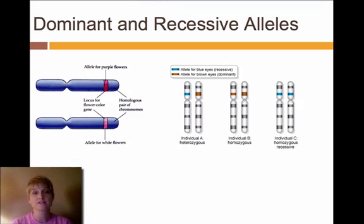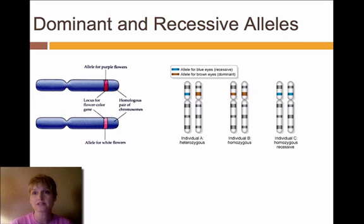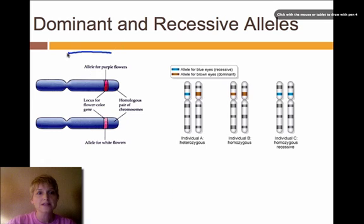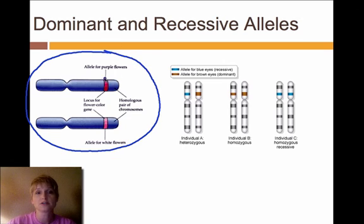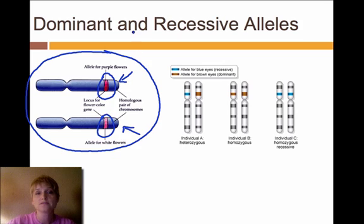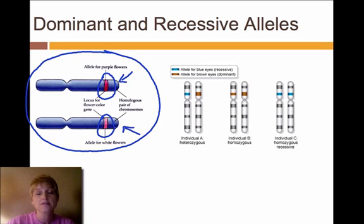One of the first things that he figured out from his thousands of experiments with pea plants was that there was a dominant trait and a recessive trait. We now know that those traits are carried on the alleles that are in the chromosomes. These are homologous chromosomes — this might be the chromosome from dad and this might be the chromosome from mom — and we see they each have an allele. This one has the allele for purple flowers and this one has the allele for white flowers. Mendel found out that purple flowers are dominant to white flowers. So with this allele pair, the flowers on that plant are going to be purple because this dominant allele is there, and whenever the dominant allele is there, the recessive is not expressed. Only the dominant allele is expressed.